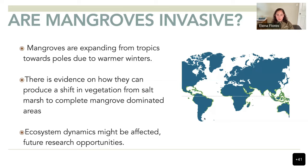There is evidence they can produce a shift in vegetation from salt marsh to completely mangrove-dominated areas — we need more research to see how that will affect the future. Ecosystem dynamics can also be affected, including impacts on invertebrates, fish, and hydrology. Soil creation or erosion can be affected as well, leading to more future research opportunities.